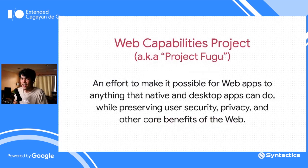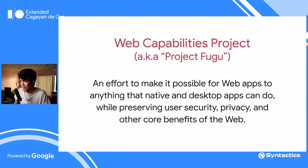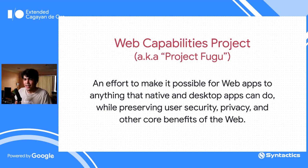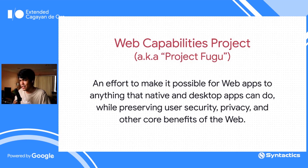For this session, we'll be talking about the Web Capabilities Project, also known as Project Fugu. It's an effort to make it possible for web applications to do anything that native and desktop applications can do. This is a cross-company effort — not just from Google, but also other browser vendors like Mozilla, Apple, Microsoft, as well as contributors like Intel and other companies.